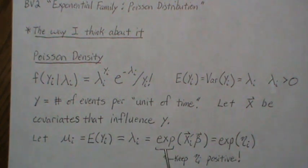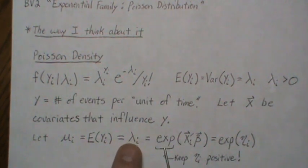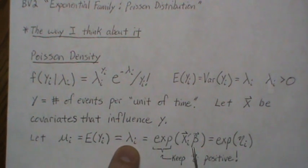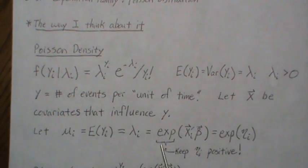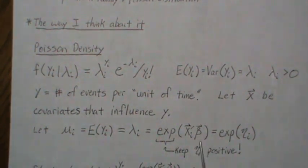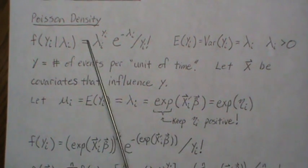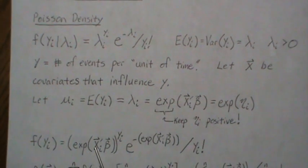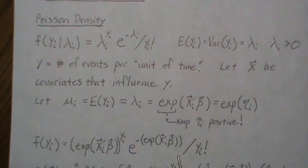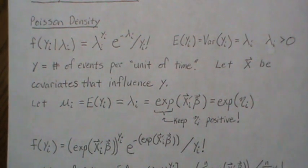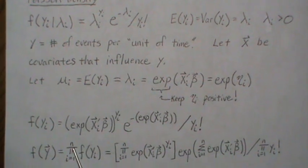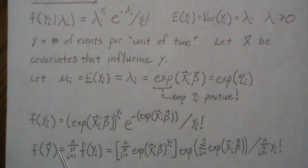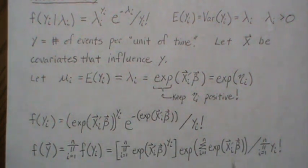It turns out that exponentiating this linear combination is what's called the canonical link. If we take the log of both sides, the log of the mean equals this linear combination. So we put that into the probability mass function — wherever there is a lambda we substitute in the exponential — and then the product across all independent observations gives us the joint probability mass function.